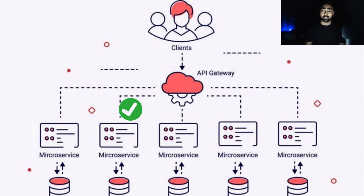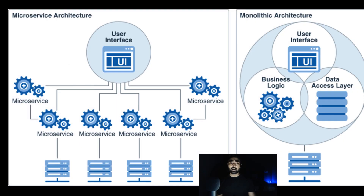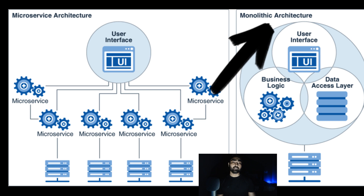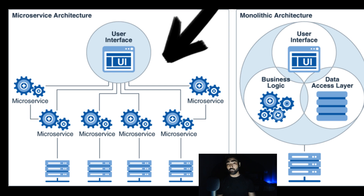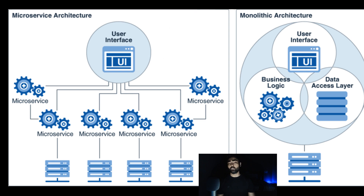Looking at a comparison diagram: in monolithic architecture, everything is under one project — UI layer, business logic, data access layer — with one database. In microservices architecture, there is one user interface connected to different microservices — multiple APIs — and every API has its own database and its own technology. One might use SQL, another MongoDB, another CosmosDB.